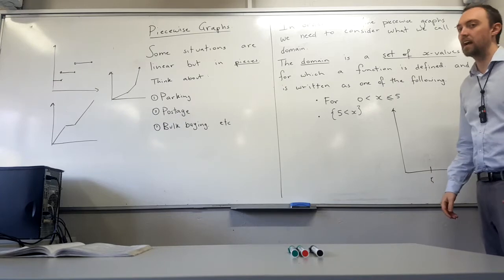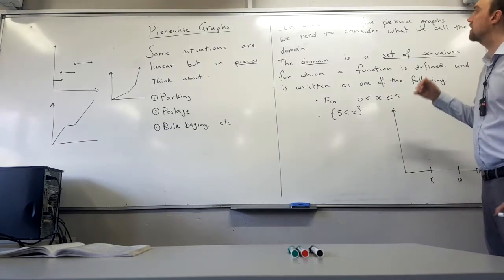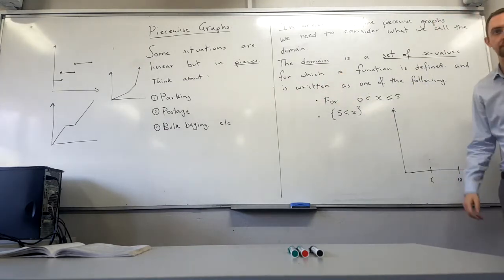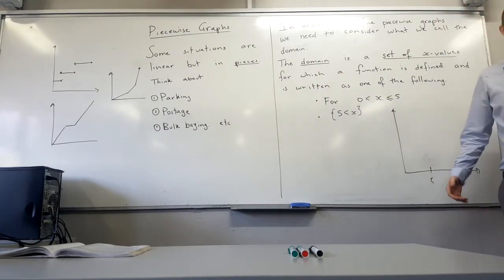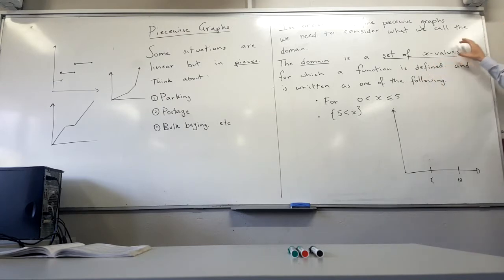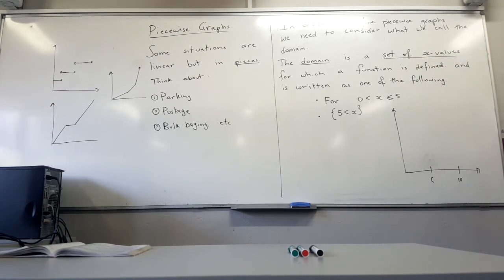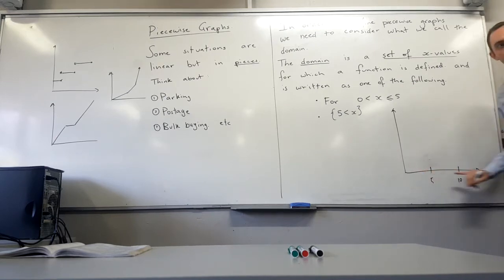So in order to define our piecewise graphs, we need to think about what we call the domain. The domain is a set of x values where the function is defined. So we're thinking about x values which is our horizontal axis.